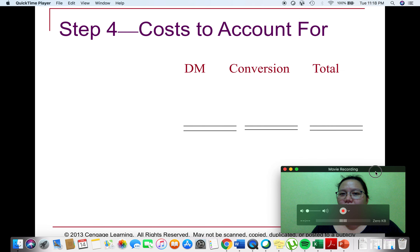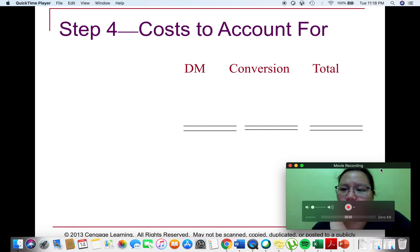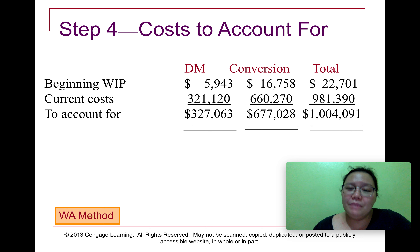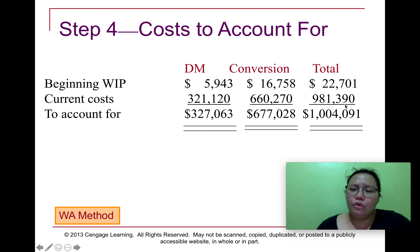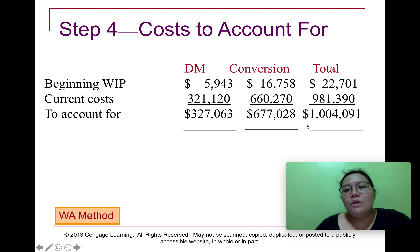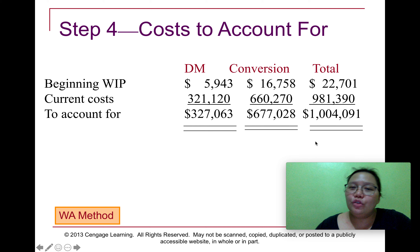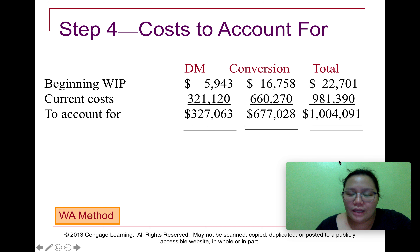Step 4 is to compute the cost to account for. The direct material and conversion costs of the beginning work in process, as well as the current period costs, are typically given in the problem. We simply compute the total of these costs. In this case, the total cost to account for is 1,004,091. The cost accounted for in step 6 must equal this amount.